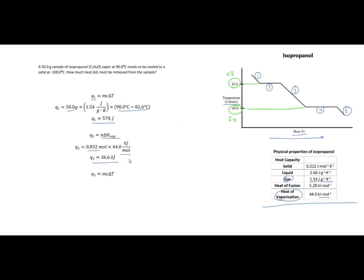On to section 3. This is where I'm going to take my liquid and cool it from 82.6 all the way down to the freezing point, which is at negative 89 degrees Celsius. Again, because I am changing temperature, my Q3 is simply Q equals MC delta T.